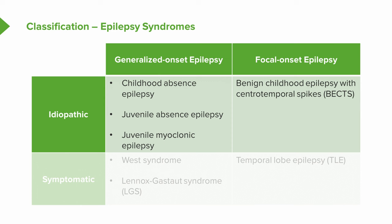The focal onset epilepsy that is also idiopathic is benign childhood epilepsy with centrotemporal spikes, called BECCS. This is an important idiopathic epilepsy syndrome where seizures are focal in onset.